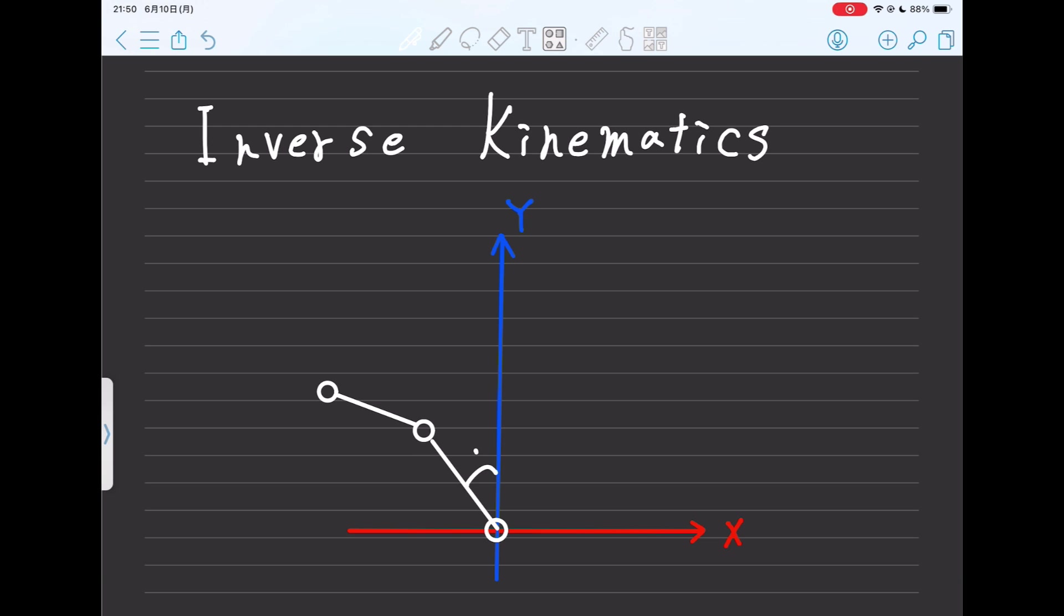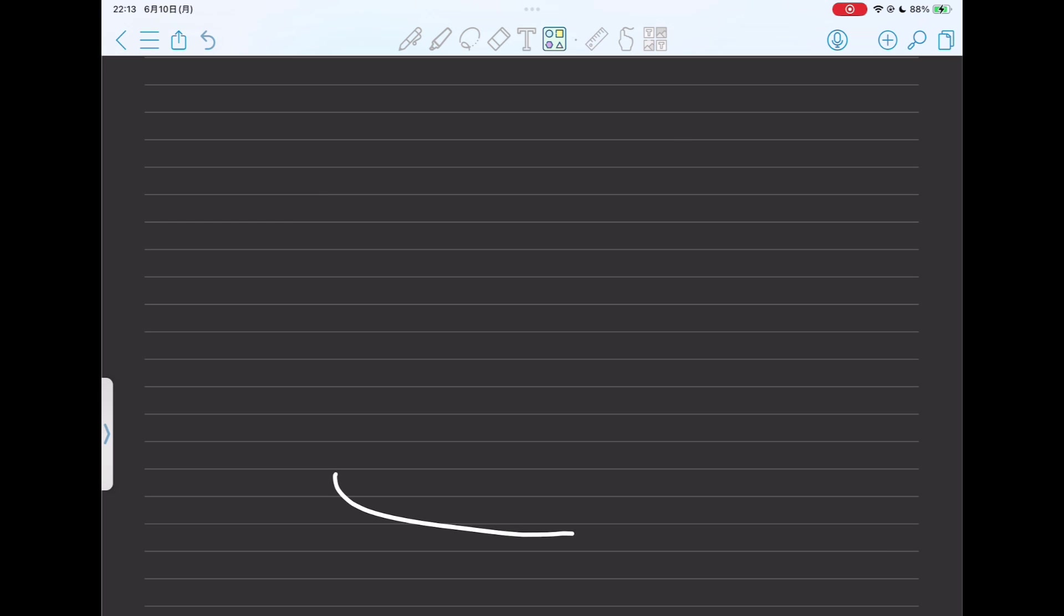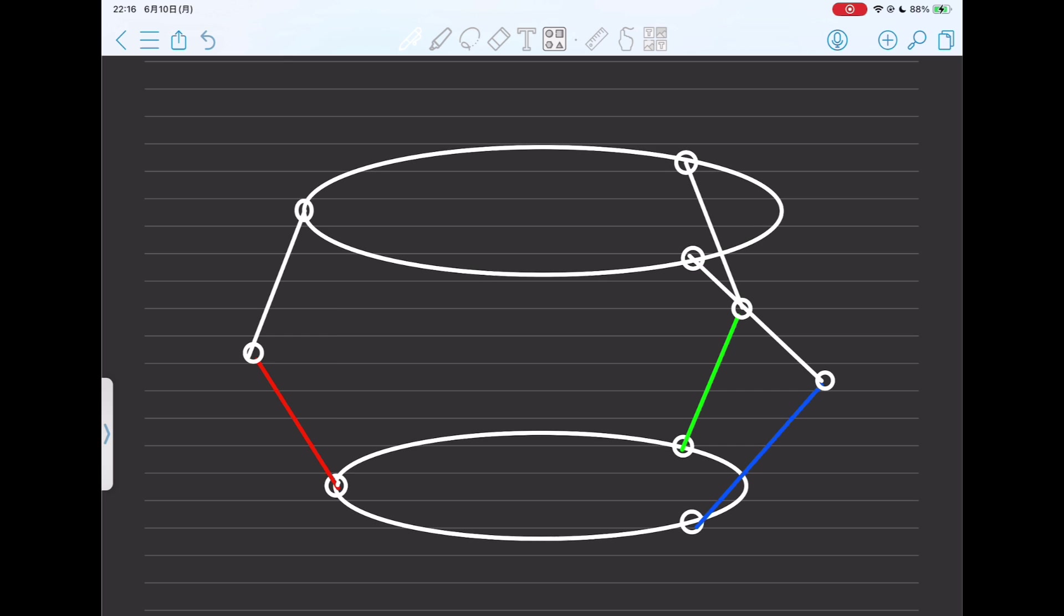Inverse kinematics is the calculation of the rotation angles of the motors to achieve the desired posture of the robot. In the case of this project, we are trying to determine how many degrees each of the three motors should rotate to achieve the height of the platform and its normal vector.